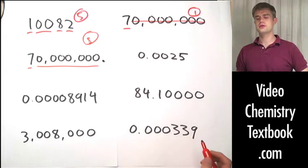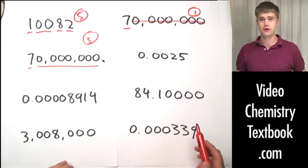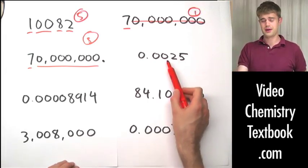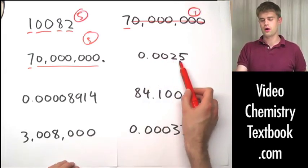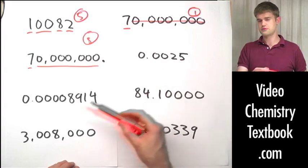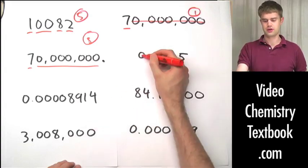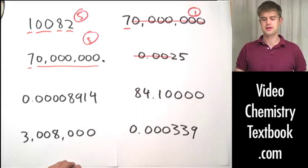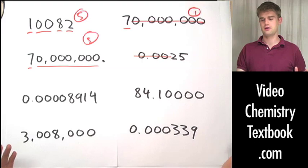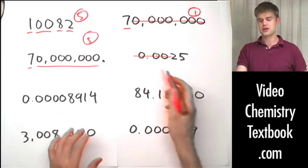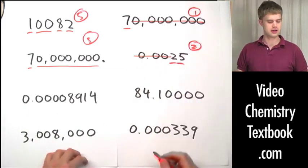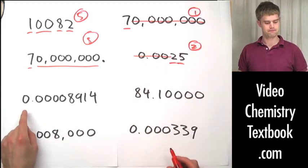0.0025. Zeros to the left, or coming before significant figures, are never significant. It doesn't matter whether there's a decimal point or not — never significant if they're coming to the left. So there are only two significant figures here.